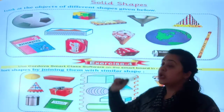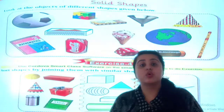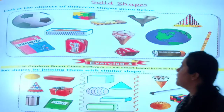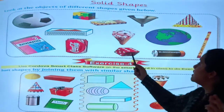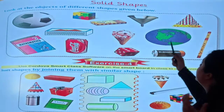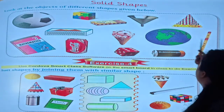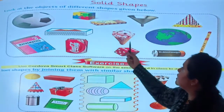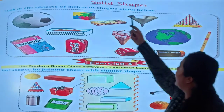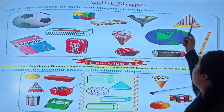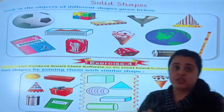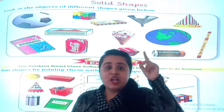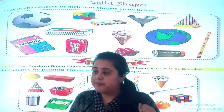This ice cream cone is also solid in shape. Other examples of solid shapes include: a cell, a sphere, a fruit, an ice cream, your hand, and the floor. All of these are solid in shape.